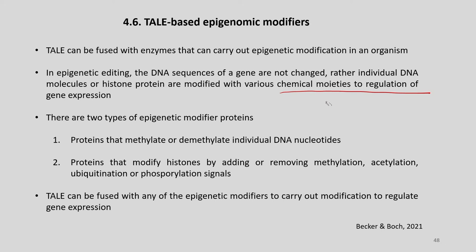We need to know the difference between epigenetic editing and genetic editing. In genetic editing there is a change of the genetic sequence, but in epigenetic editing the sequence is not changed — some modification either in the base or in the histone protein takes place. This can be done with TAL-based epigenomic modifiers, which are of two types mostly based on the modifier proteins: proteins that methylate or demethylate individual DNA nucleotides, and proteins that modify histones by adding or removing methylation, acetylation, ubiquitination, or phosphorylation.